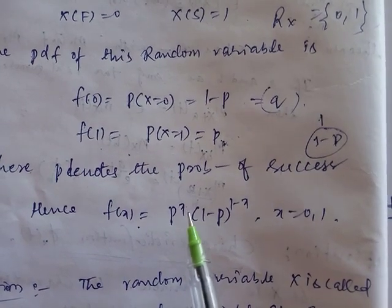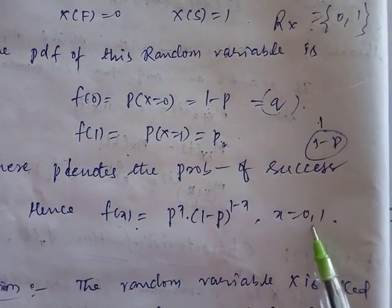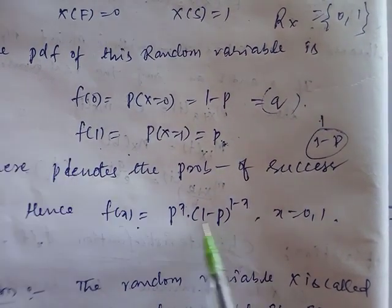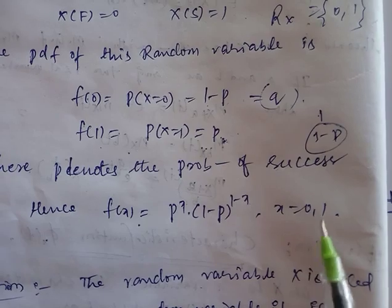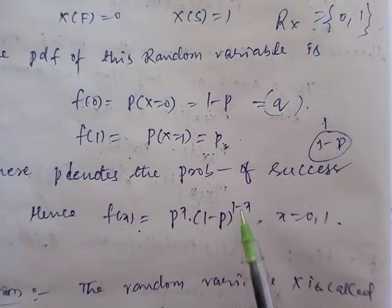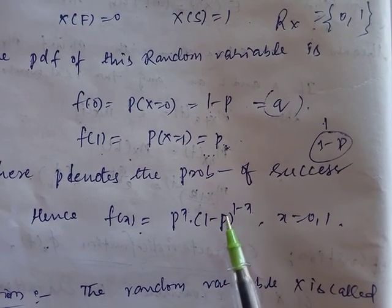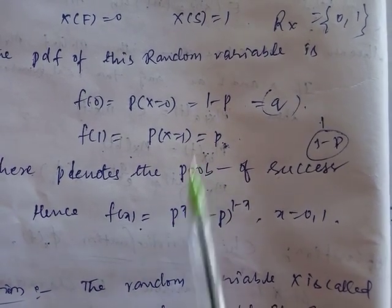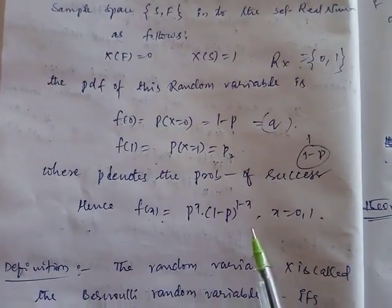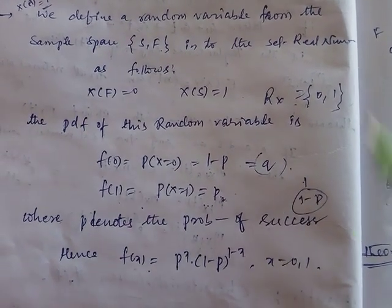We can combine these two cases into one formula: f(x) = p^x · (1−p)^(1−x). If x = 0: p^0 · (1−p)^1 = 1−p. If x = 1: p^1 · (1−p)^0 = p. This is the probability density function of the Bernoulli random variable.